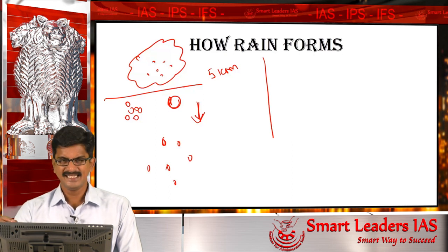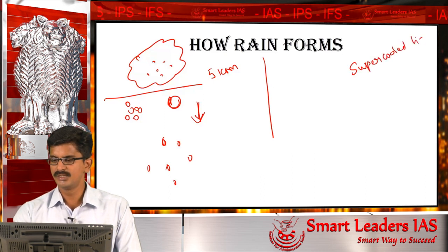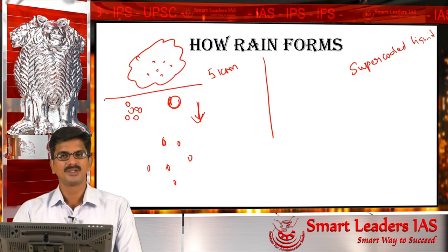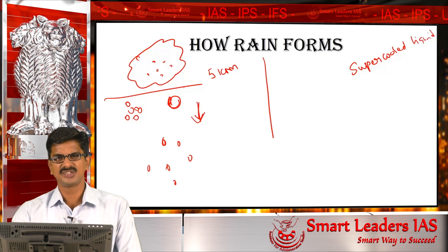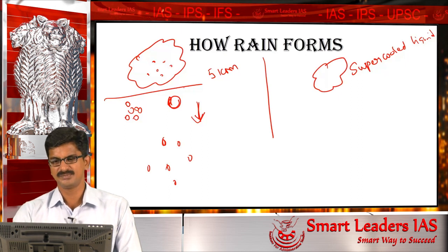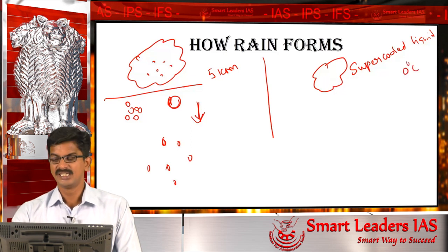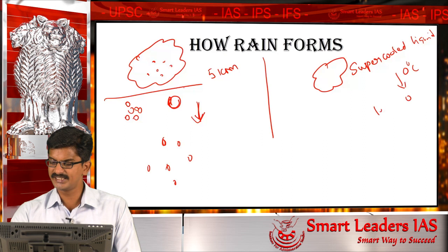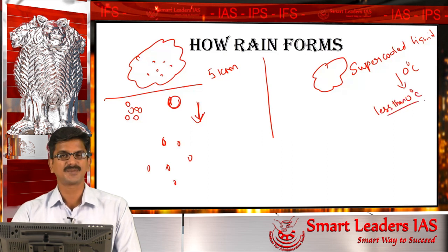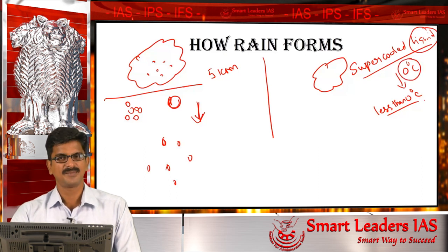The second reason how rainfall forms is due to a phenomenon called supercooled liquid. We all know that water freezes at 0 degrees Celsius, but clouds which are at very great heights have reduced pressure. Due to the reduced pressure, the freezing point of water also gets lower — from 0 degrees Celsius, the freezing point goes below 0 degrees Celsius. When water remains in a liquid state even below 0 degrees Celsius, it is called a supercooled liquid.